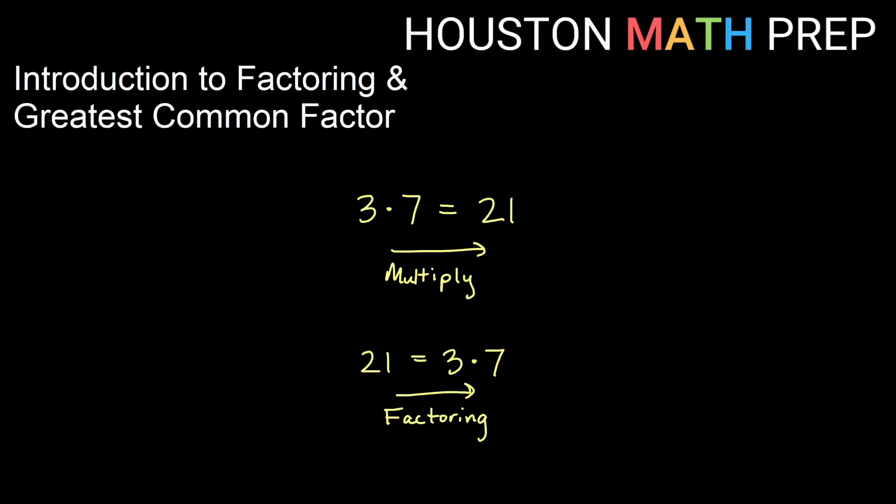Welcome back everyone. We are here to start you on your road to factoring. We're going to introduce greatest common factor and how to do that in algebra. Just a quick reminder before we start: we start out as kids multiplying something like 3 times 7, we get 21. Remember that factoring is going to be the opposite of multiplying or the opposite of distributing, and so that's the concept we're going for here.